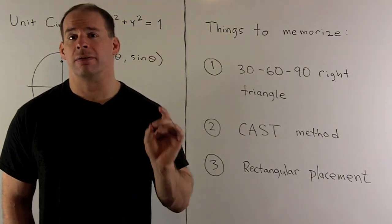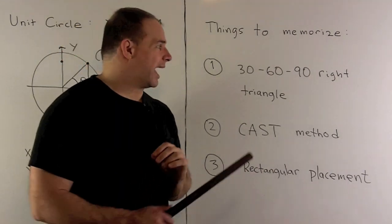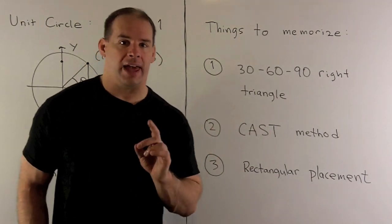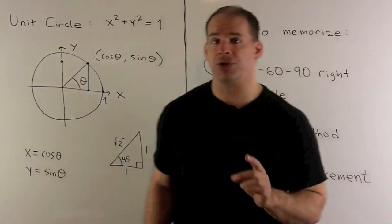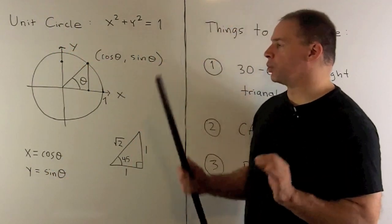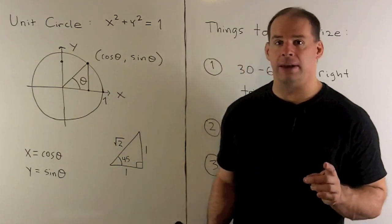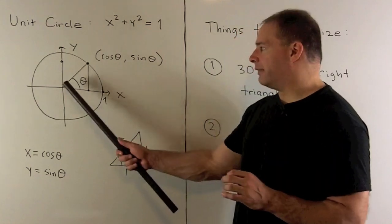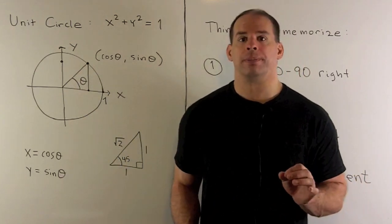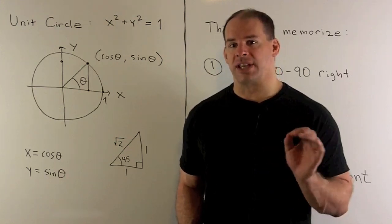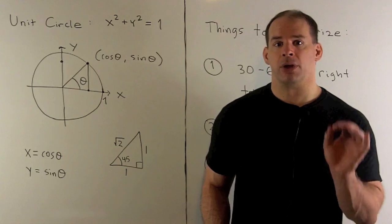What we want to do now is present a scheme for memorizing trig values. To do this I want to tie together three main ideas: first we'll have the 30-60-90 right triangle, then we'll have the CAST method, and finally we'll have rectangular placement on the unit circle. The unit circle is given by the equation x² + y² = 1 — a circle in the xy-plane centered at the origin with radius one. If I take an angle θ measured off the positive x-axis in the counterclockwise direction, that gives me a point on the unit circle where the x value is cosine of θ and the y value is sine of θ. We're going to have to memorize cosine and sine for some special angles, and that's the point of this video.